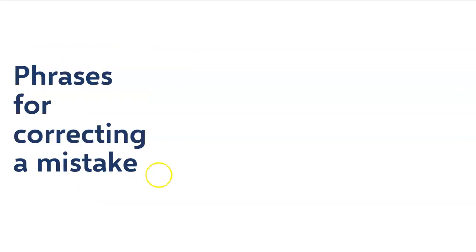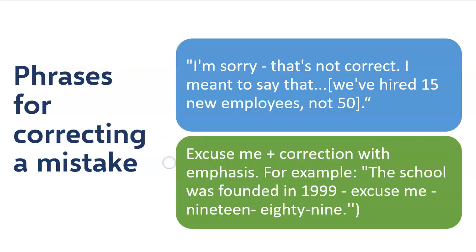Now, what are some of the phrases for correcting a mistake? Here are some examples. First one, I'm sorry, that's not correct. I meant to say that we've hired 15 new employees, not 50. You're putting emphasis on both these words, 15 and 50, because somewhere the audience has misunderstood.